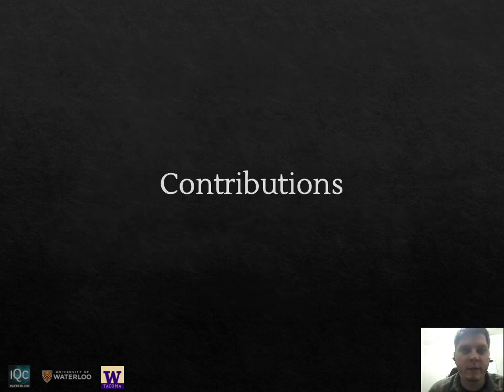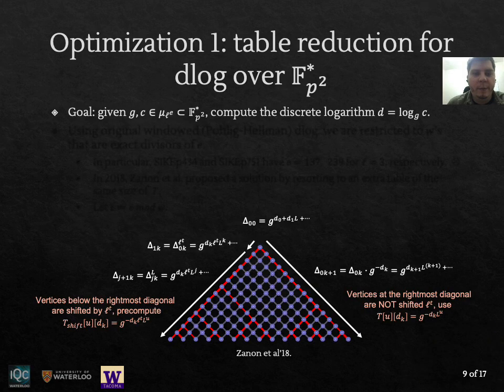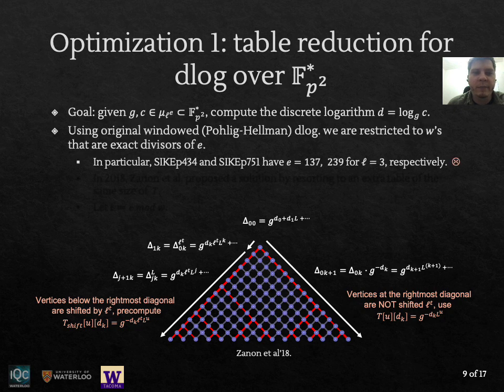We can now move on to the contributions. Before going to the first optimization I should mention that the previous windowed Pohlig-Hellman technique works well when w divides the exponent e. It turns out that for SIKE P434 and P751 the exponent e is a prime number for the two iterations. So no w is going to divide e.